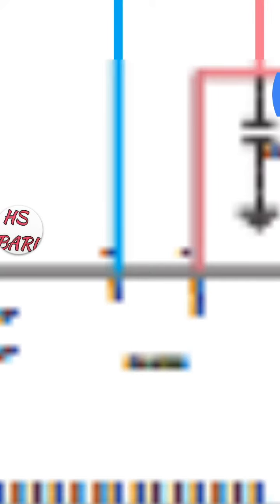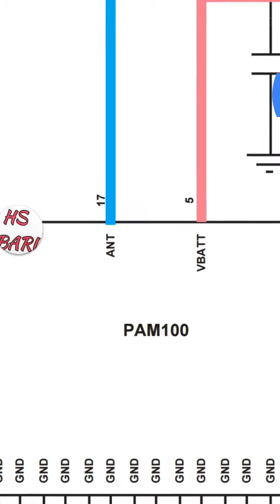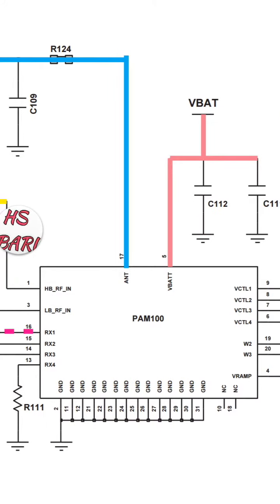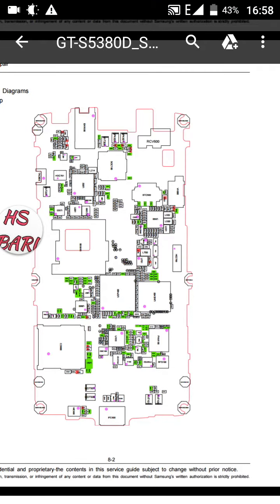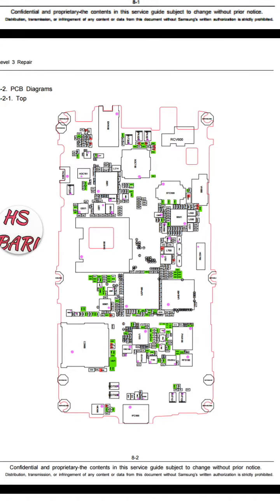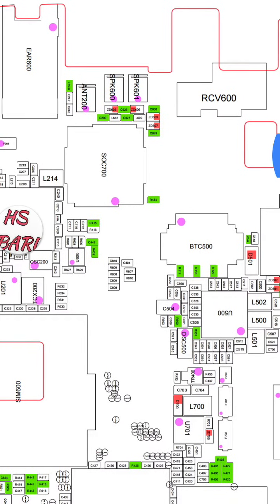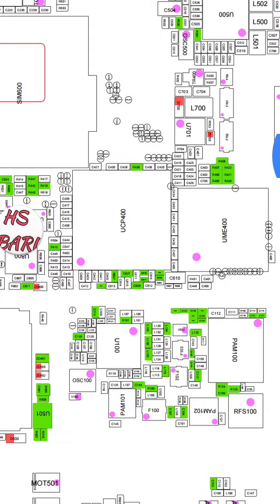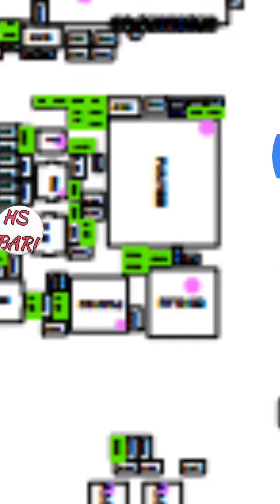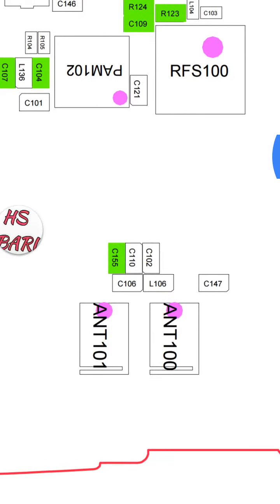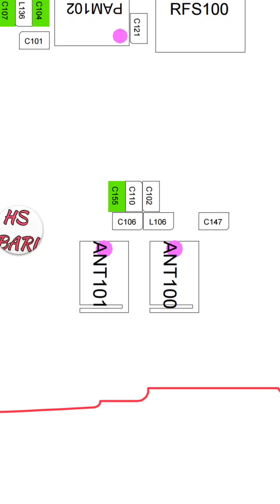Next, the line goes to an IC whose name is PAM100. You can see 'ANT' is written on this IC, which means this point of the IC is connected to the antenna of the mobile phone. Once you get this number PAM100, go to the full diagram of the mobile phone. In the full diagram, you have to find out PAM100 — and here it is. This is our antenna switch.